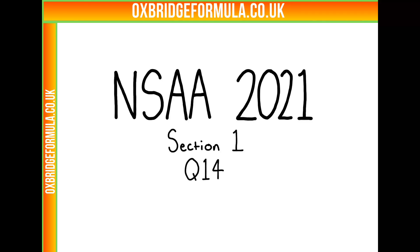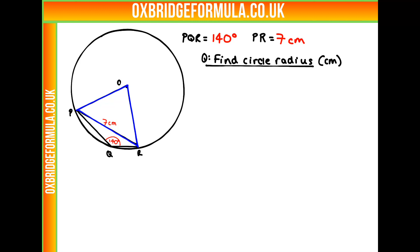This is NSER 2021, section 1, question 14. We're given a circle here that has two triangles in it. We have triangle OPR, which has a length here of 7 centimeters, and we have PRQ, which has an angle here of 140 degrees. We have to find out what the circle radius is in centimeters.